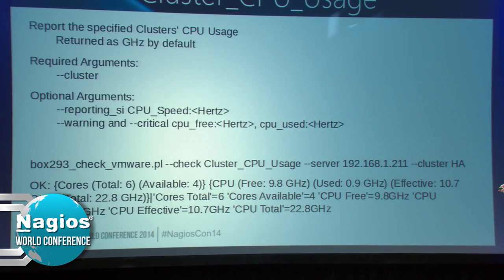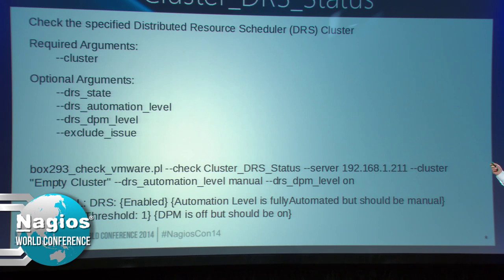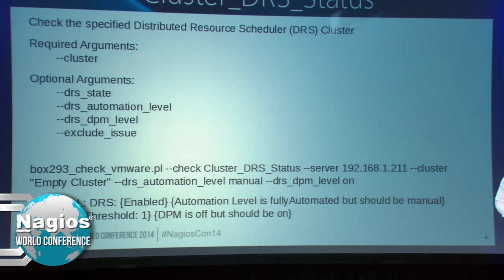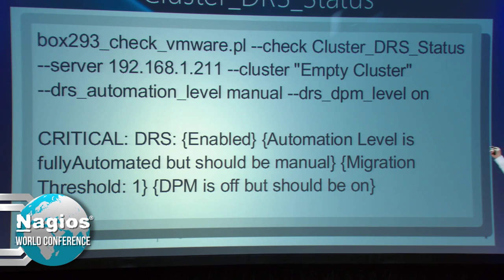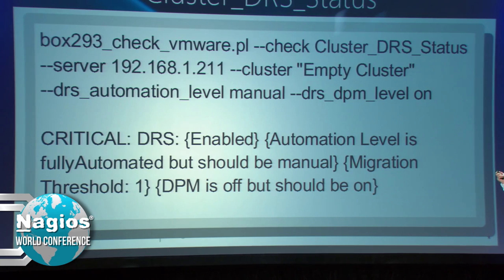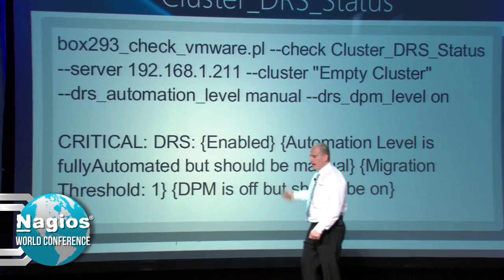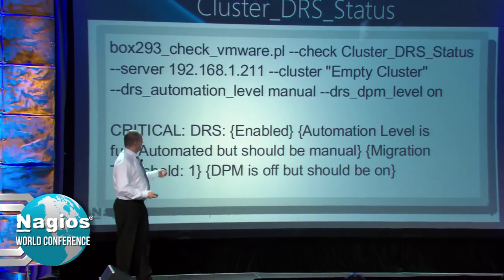The cluster DRS status - if you've got a distributed resource scheduler cluster set up, you might want to check that DRS is turned on. An admin might have turned it off. In this example, it's checking that the automation level is set to manual and the DPMS level is set to on. It's critical because the automation level is fully automated but should be manual, and DPMS is off but should be on. There are two different things causing it to go critical, and it tells you exactly what they are.